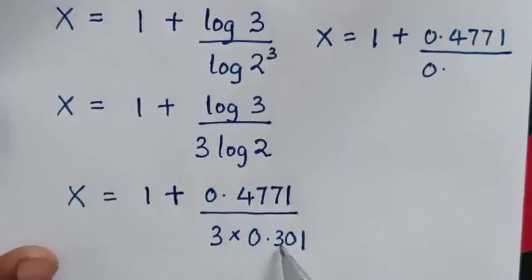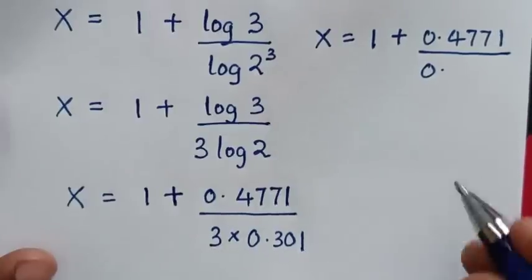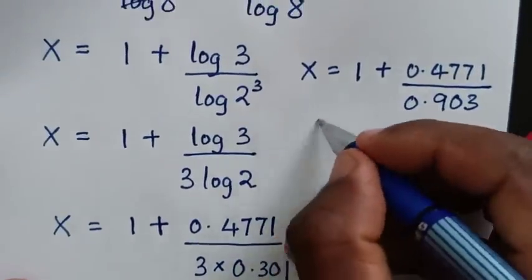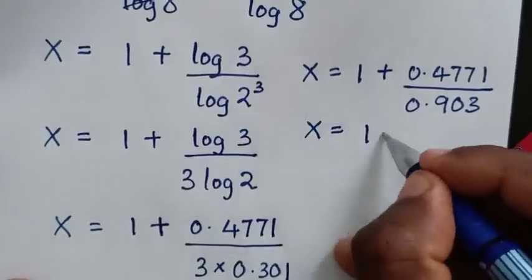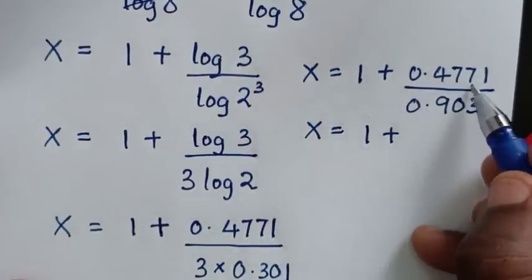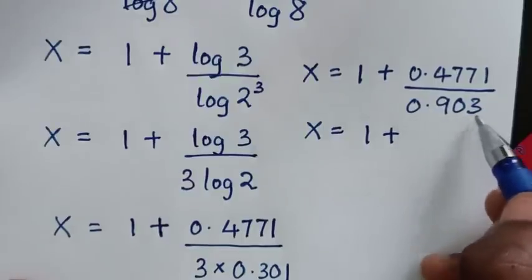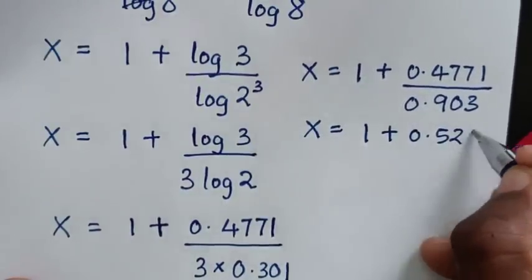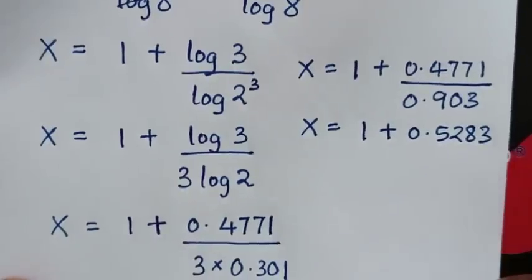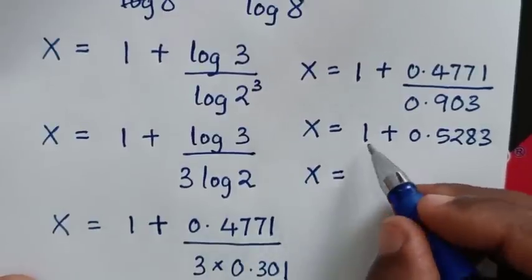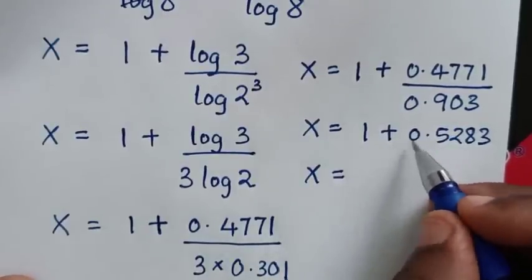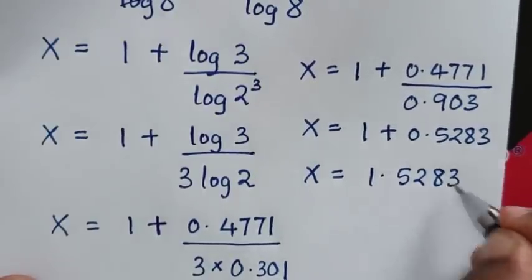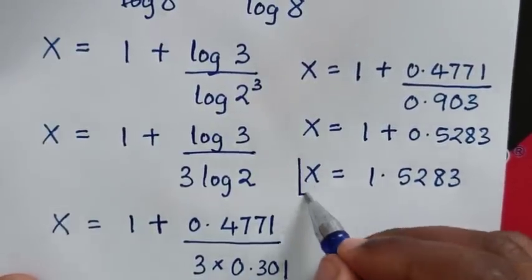Multiplying 3 times 0.301 gives 0.903. Then x is equal to 1 plus 0.4771 divided by 0.903, which is 0.5283. So x is equal to 1 plus 0.5283.